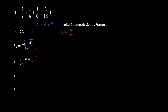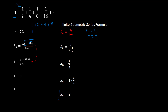Plugging in the numbers: T1 is the first term, which is 1, and r is the common ratio — you're multiplying by 1 half each time, so r equals 1 half. That gives us 1 over (1 minus 1 half). 1 minus 1 half is 1 half, so 1 divided by 1 half equals 1 times 2, which is 2. So the sum of this infinite series equals 2, and we saw earlier that adding more and more terms kept getting closer and closer to 2.